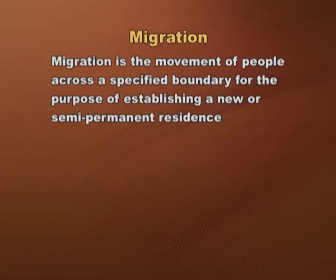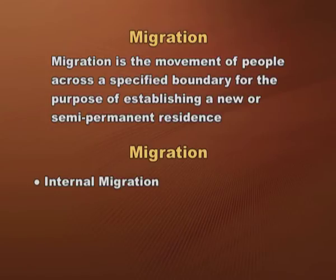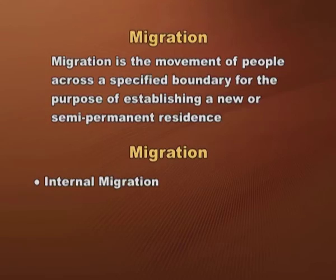Before we understand the phenomena of circulation of labour, let us understand what we mean by migration. Migration is defined as the movement of people across a specified boundary for the purpose of establishing a new or semi-permanent residence. There are two types of migration: first, internal migration — that is, migration within one country or between different regions of a country like India; and second, international migration, which means the movement of people from one country to another.